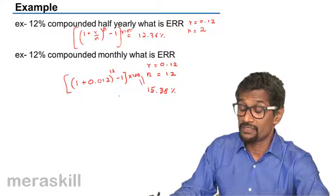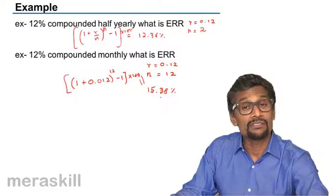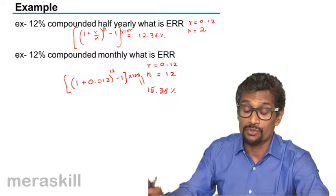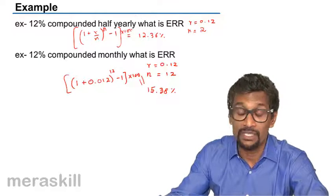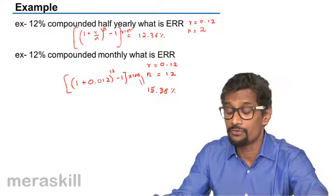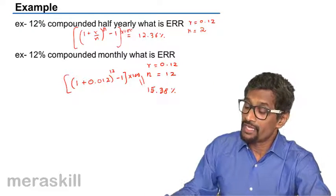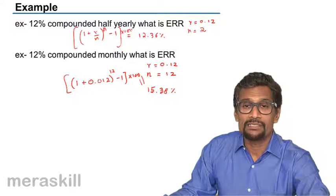So the net effective rate, since compounding is done every month, is going to be quite different from 12%. You see that as the period of compounding becomes smaller and smaller, the effective rate of return goes on increasing. So we get 15.38% in such a case.